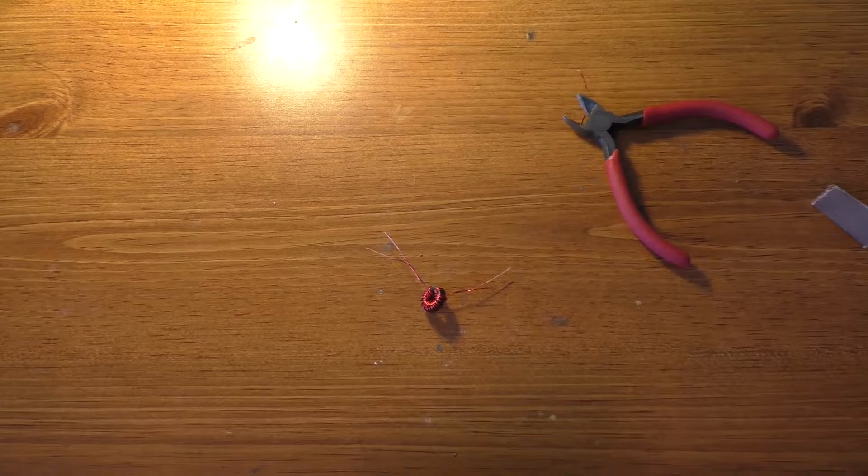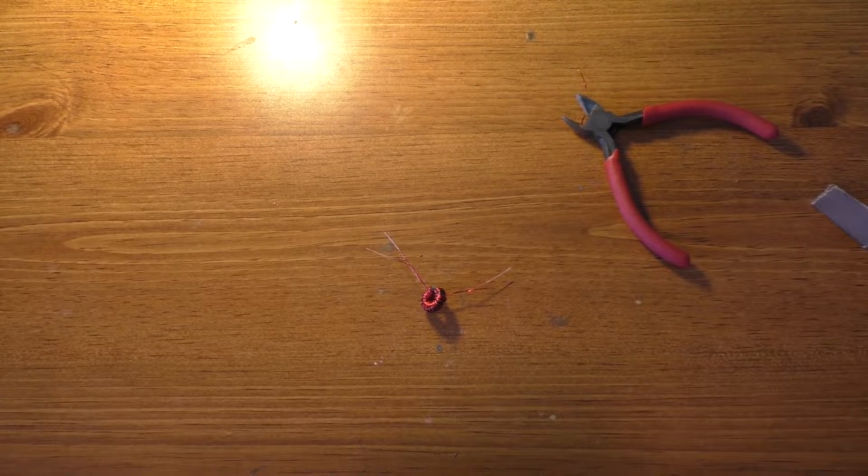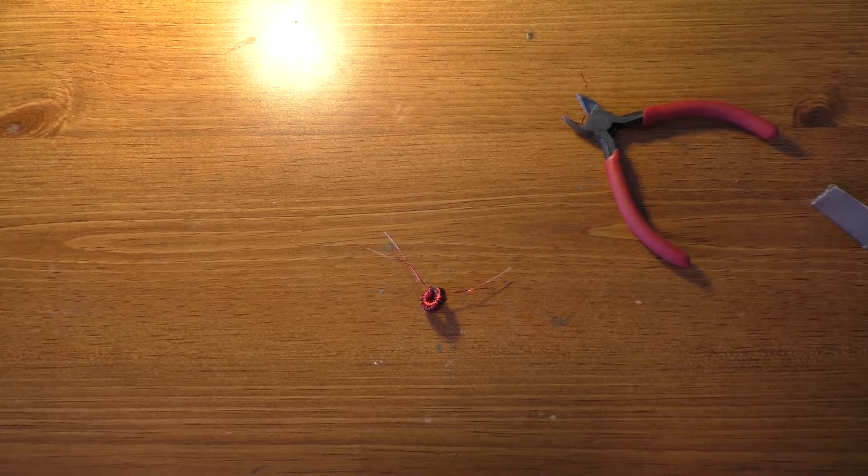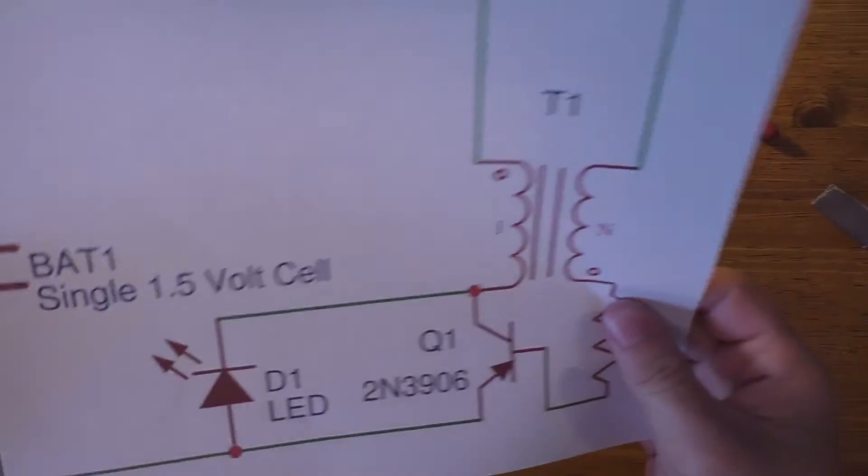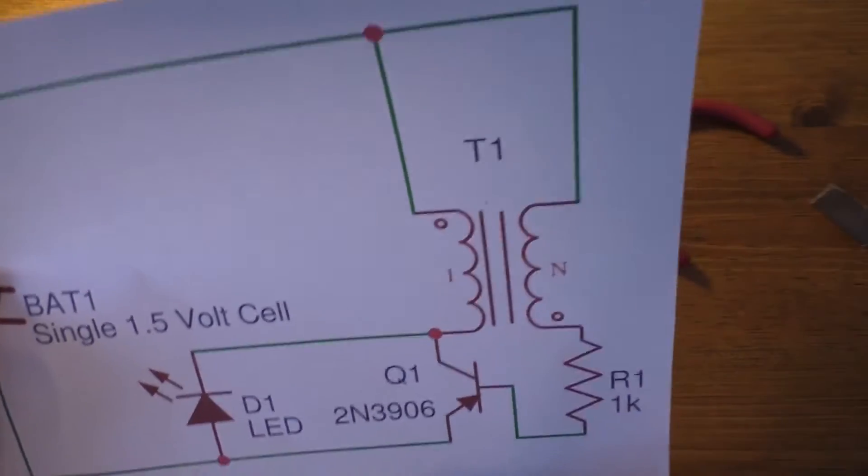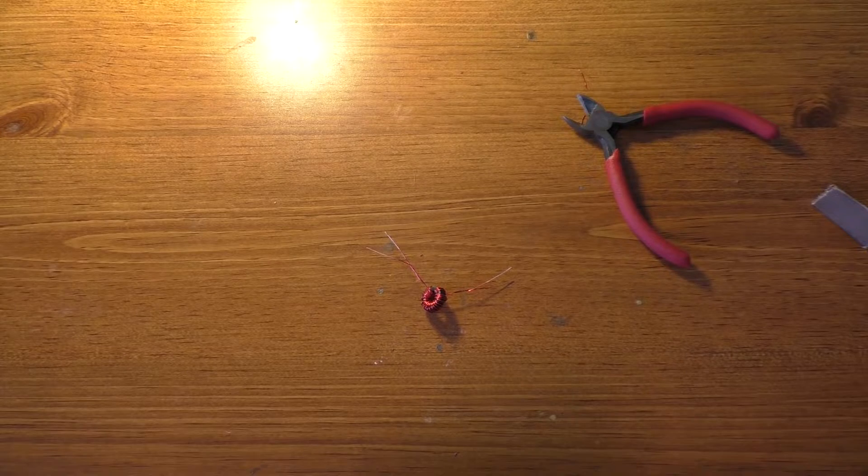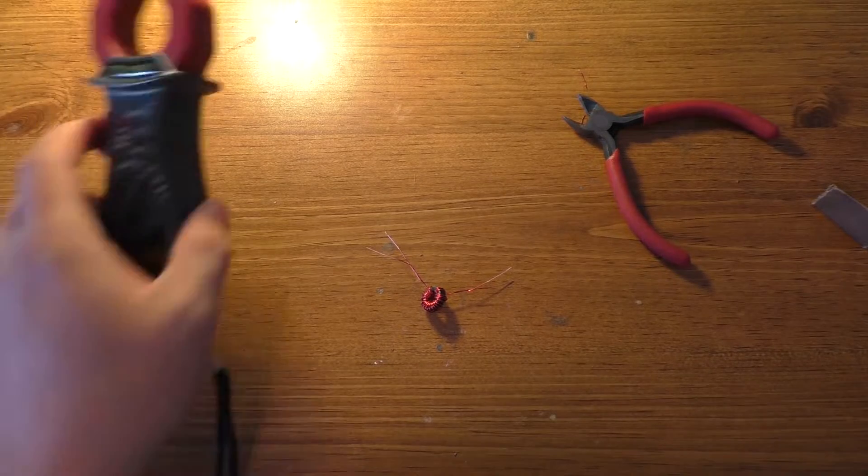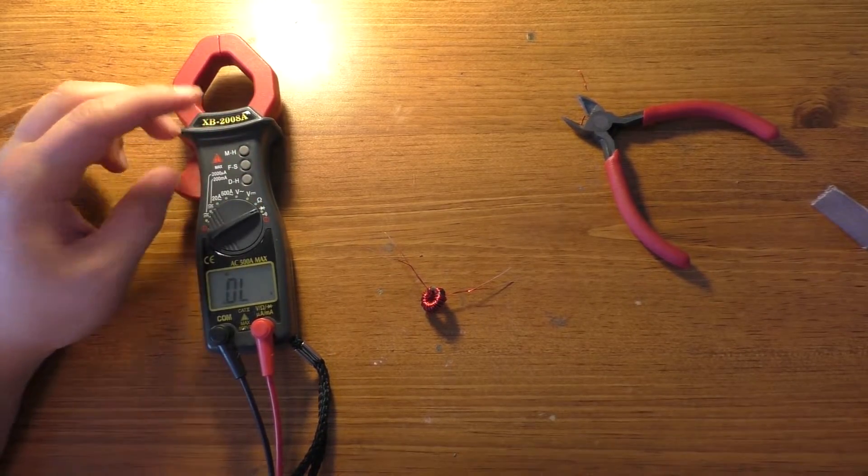So now we have to figure out which wire actually is connected together. Because if you notice on the schematic, you have two wires that end up going to the same point. So that's what we're going to set up right now. And the easiest way to do this is just take a multimeter, set it to continuity.